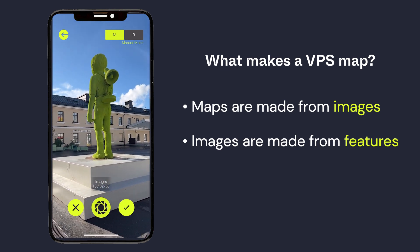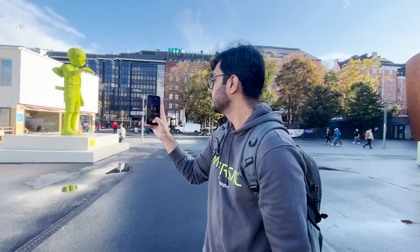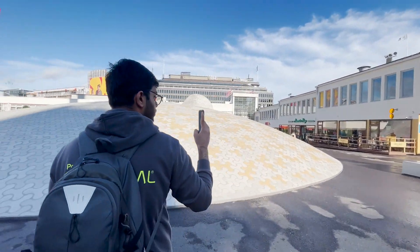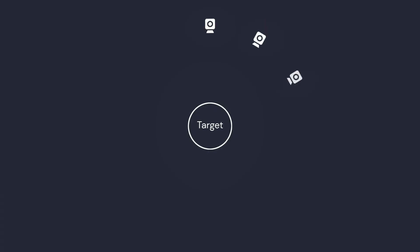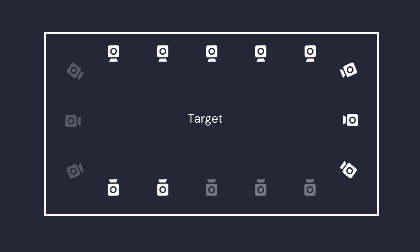Here, we'll map the area around this statue in downtown Helsinki. There are two main types of target locations to be aware of. The first we call a hotspot, where the user is outside the map looking in. The second is an arena, where the user is inside the map looking out.